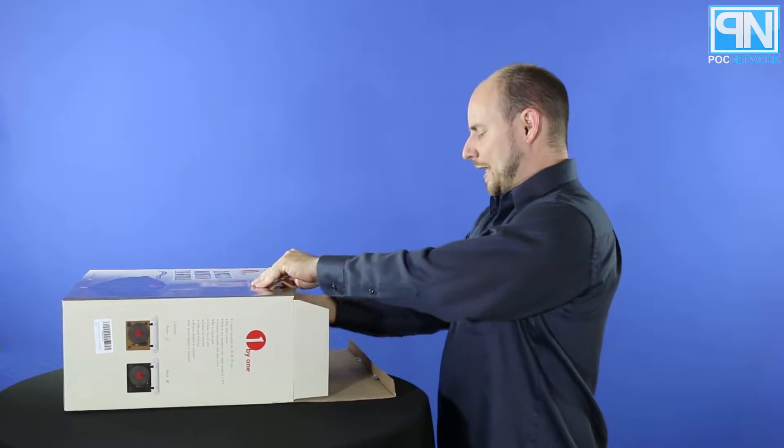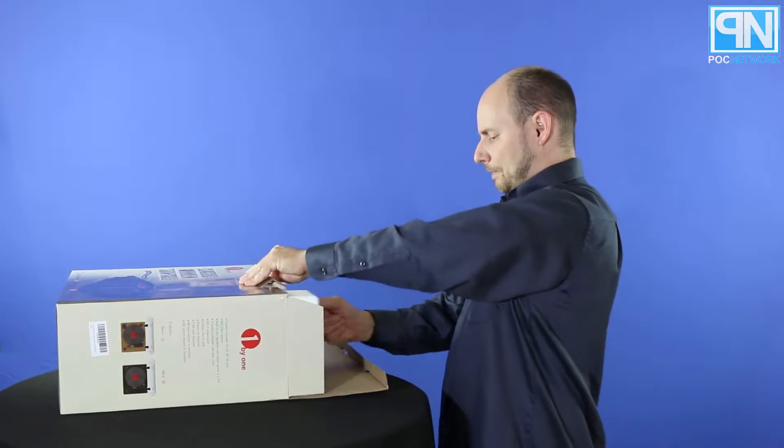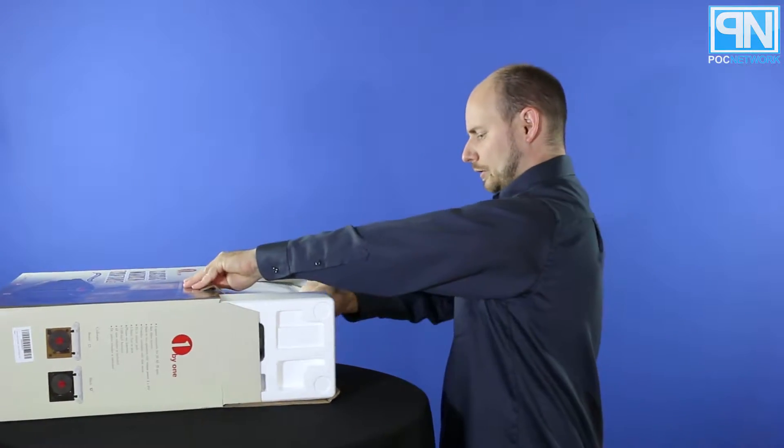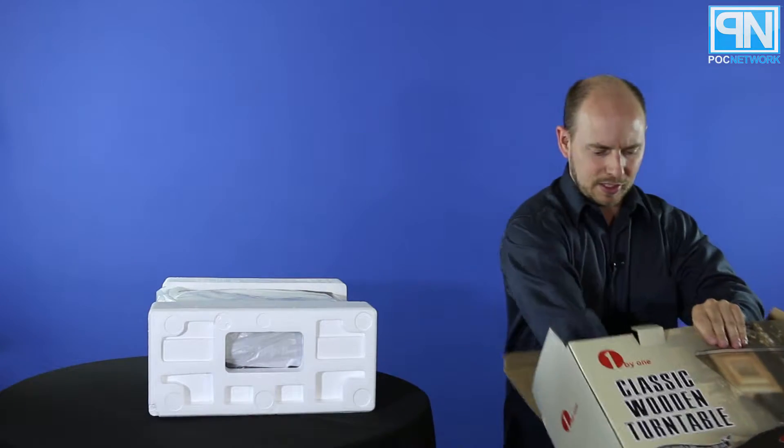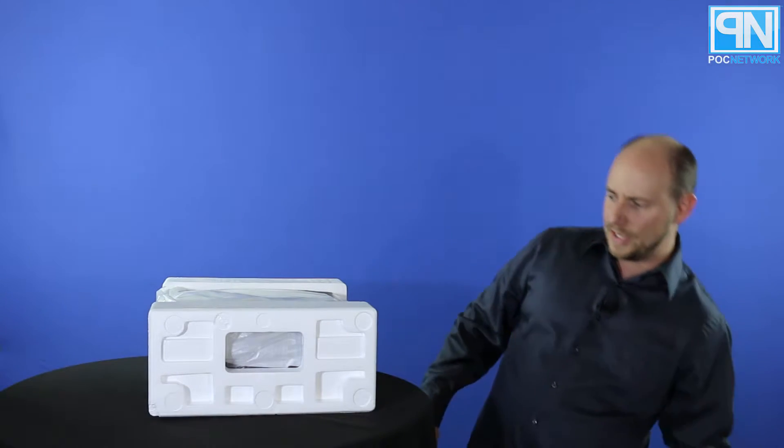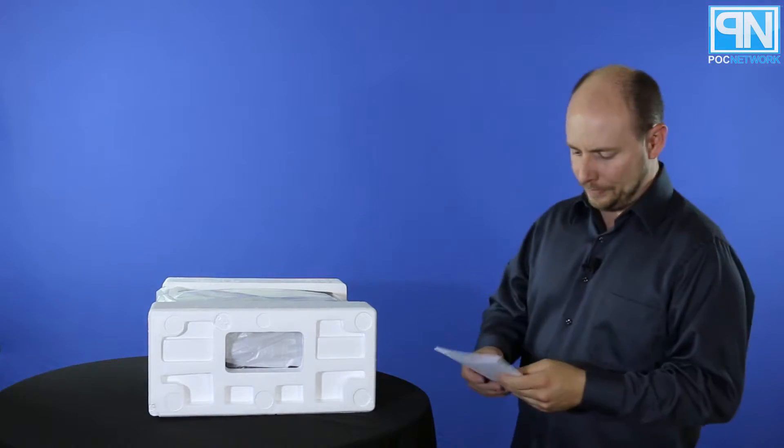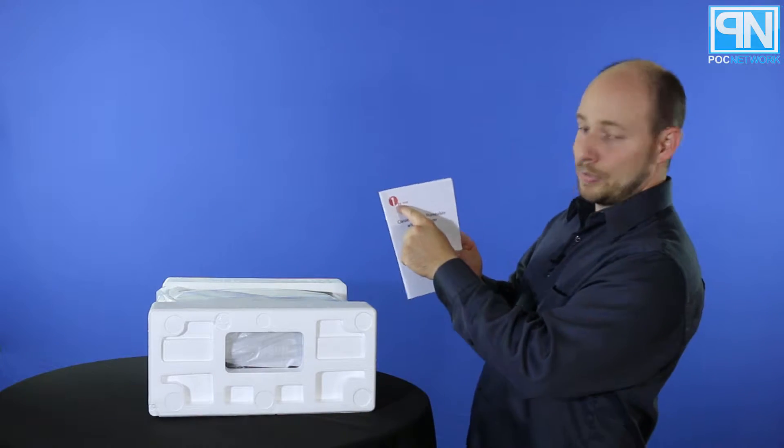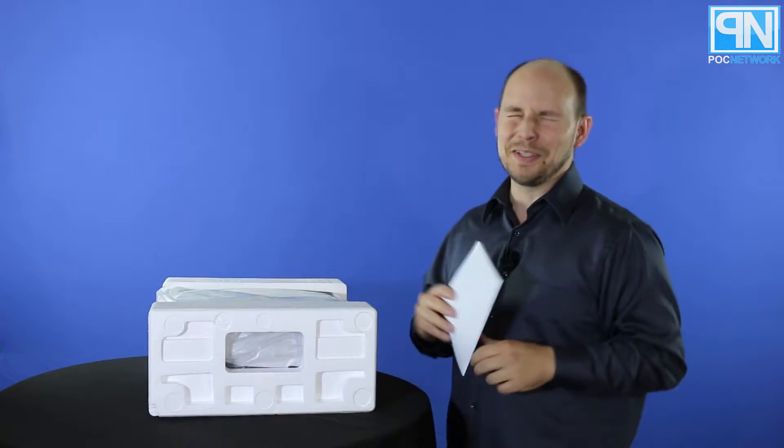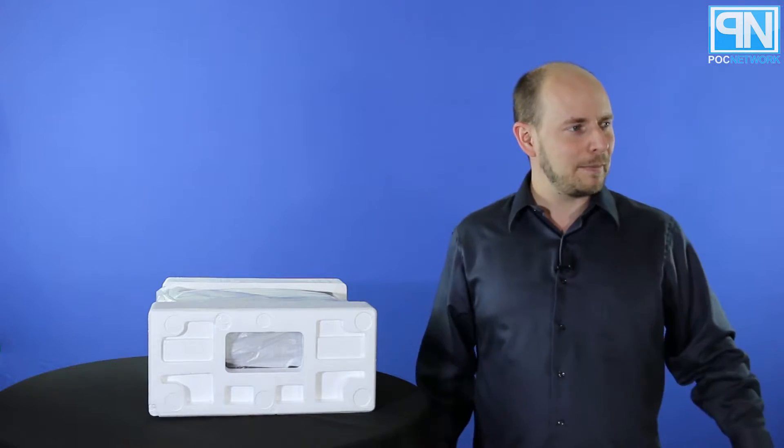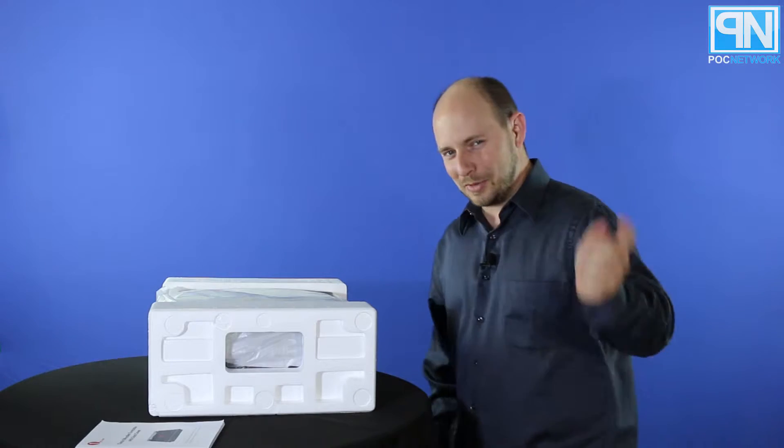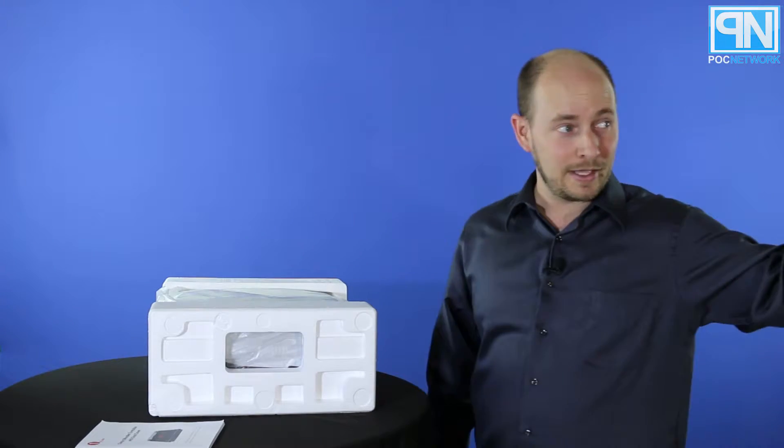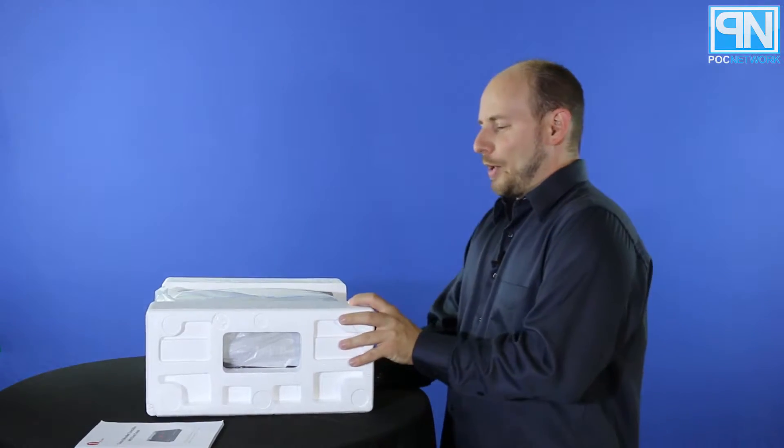We're going to take it out, move this box down. Again, the company is 1by1 - that's the number one, the word by, and the word one. First one is a number, the second one is a word. We'll pop off this styrofoam.